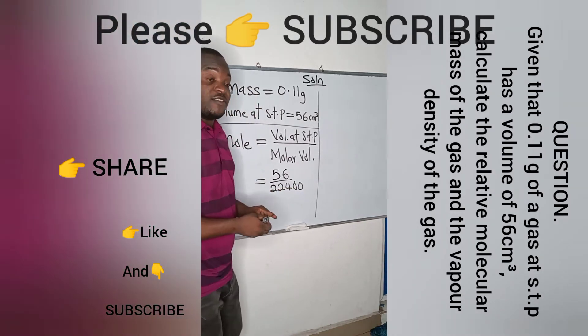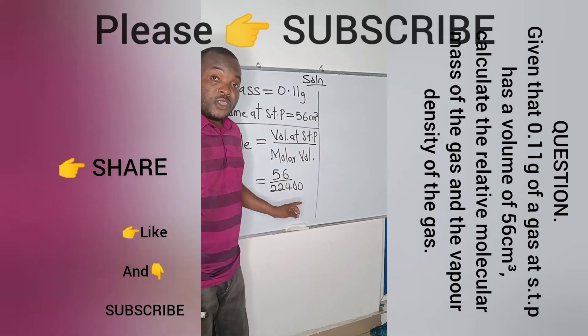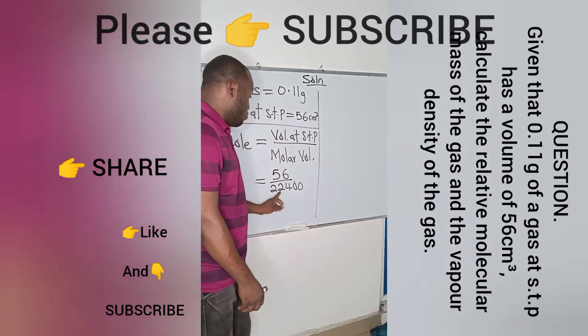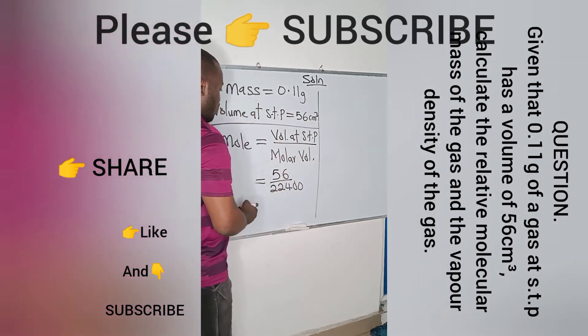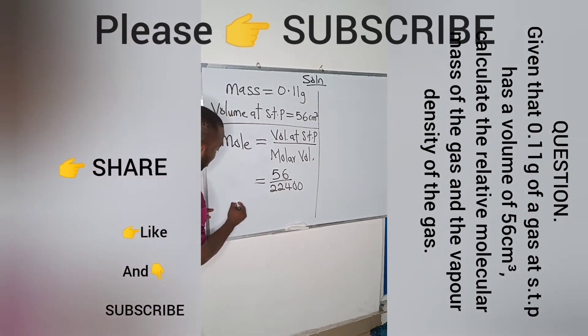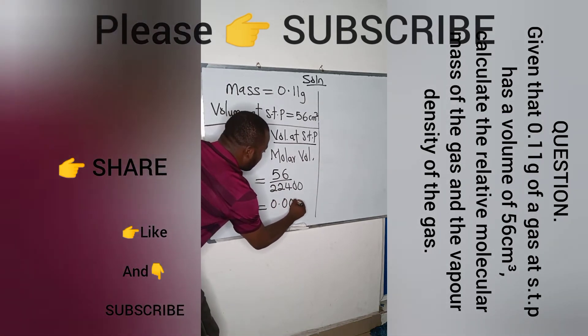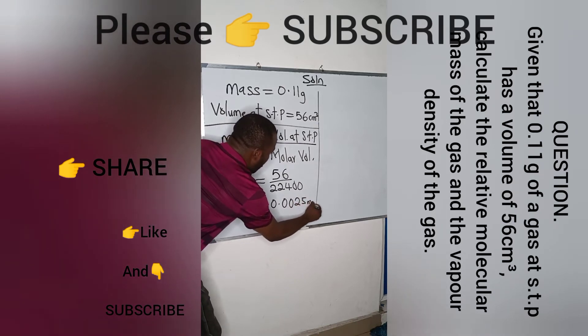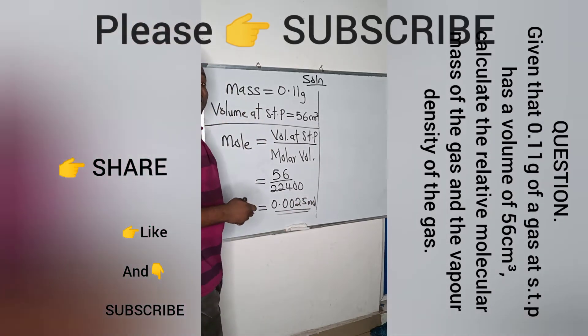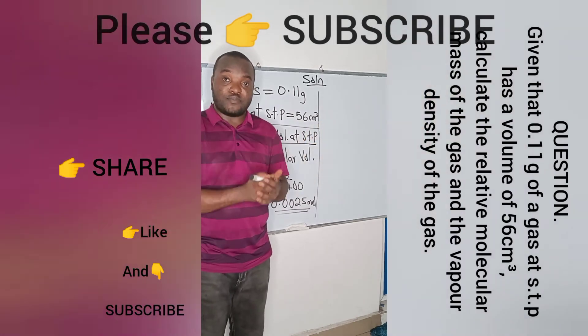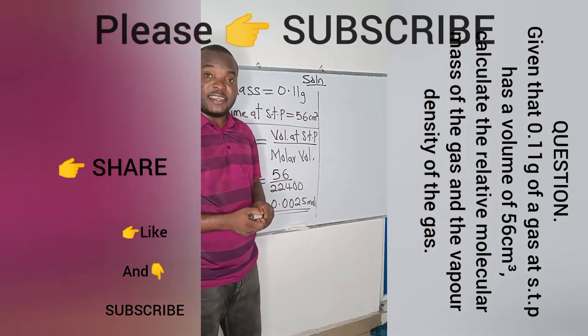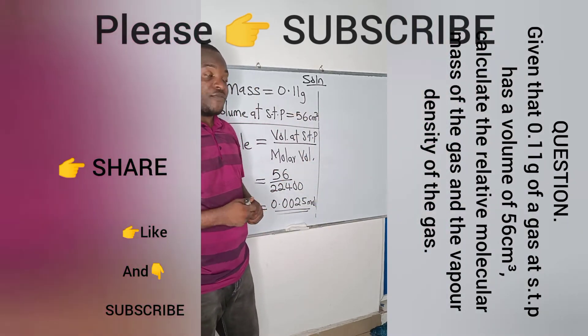Remember, I am working with cm³. If I am working with dm³, it will be 22.4. All right, this gives us our mole to be 0.0025 mole. Now that we have the mole, we can proceed in finding the molar mass of the gas.